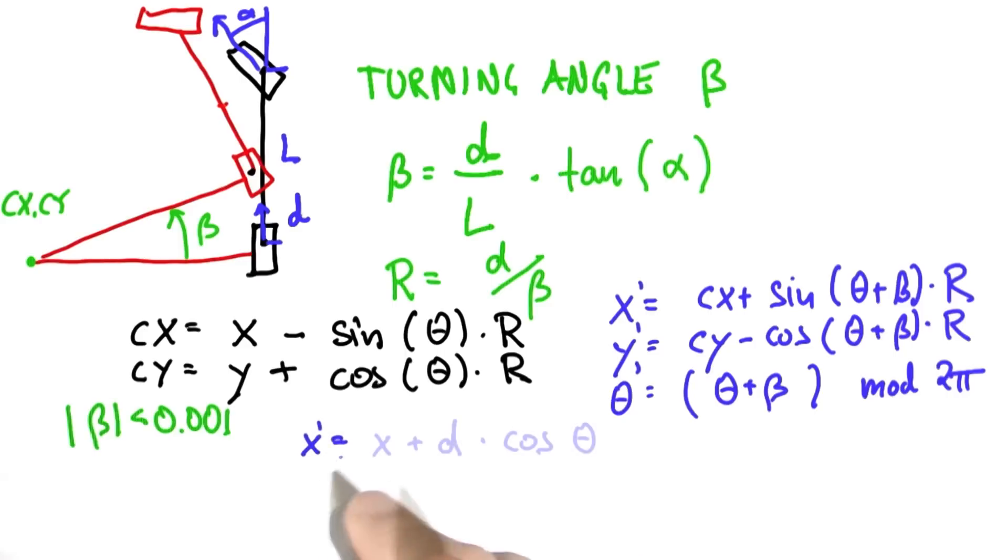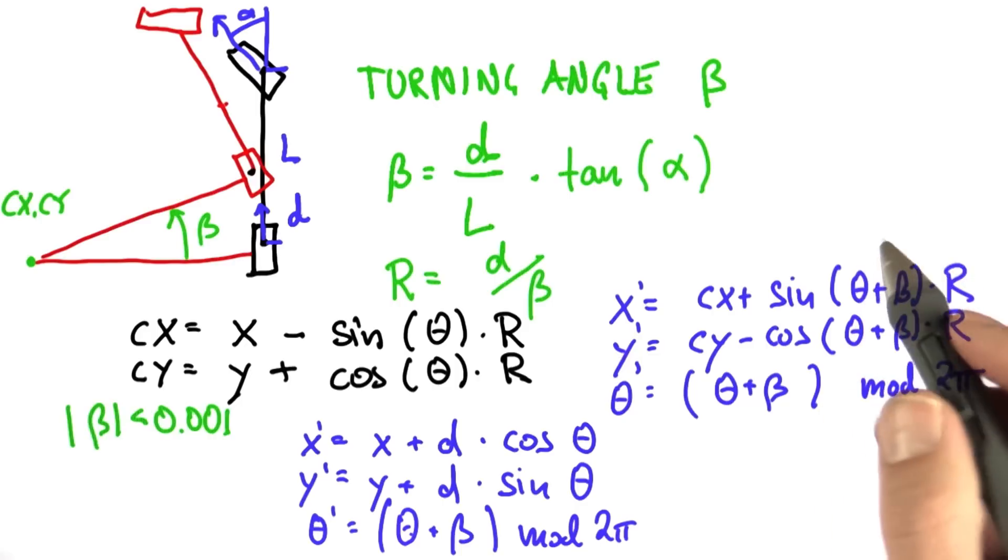Our new x is the old x plus our driven distance pointed in the cosine of the heading direction. Similarly for y, we go in sine of heading direction. And the heading direction stays the same. You could add beta, which is basically zero to be slightly more precise, or you could just use theta. It doesn't really matter.